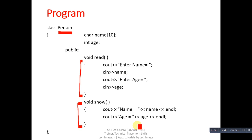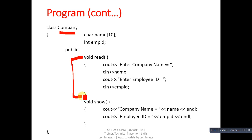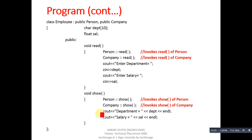The second class is Company. It also has two attributes: name and employee ID. It has a read function which will read name and employee ID from the user, and a second function, show, which will display name and ID on the console. So Person and Company are both independent base classes.